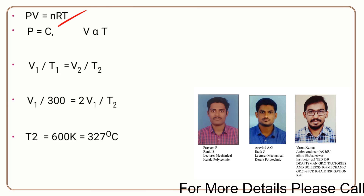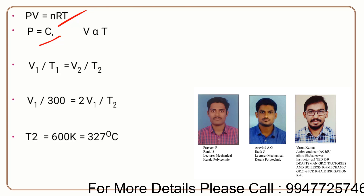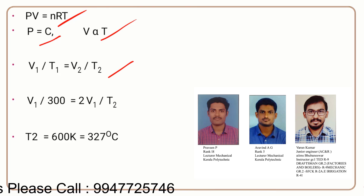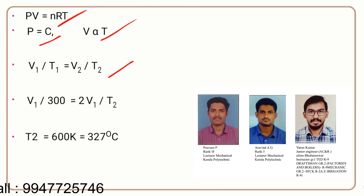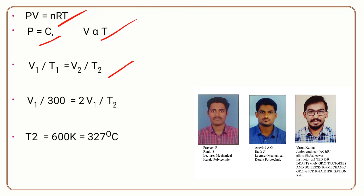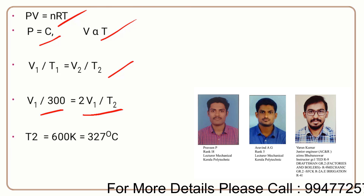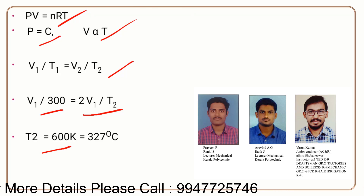Using the ideal gas equation PV equals nRT, at constant pressure the volume is directly proportional to temperature, giving V1/T1 equals V2/T2. Here T1 equals 27°C, which must be converted to Kelvin: 27 plus 273 equals 300 Kelvin. Since V2 equals 2·V1, substituting gives V1/300 equals 2·V1/T2. Solving, T2 equals 600 Kelvin.